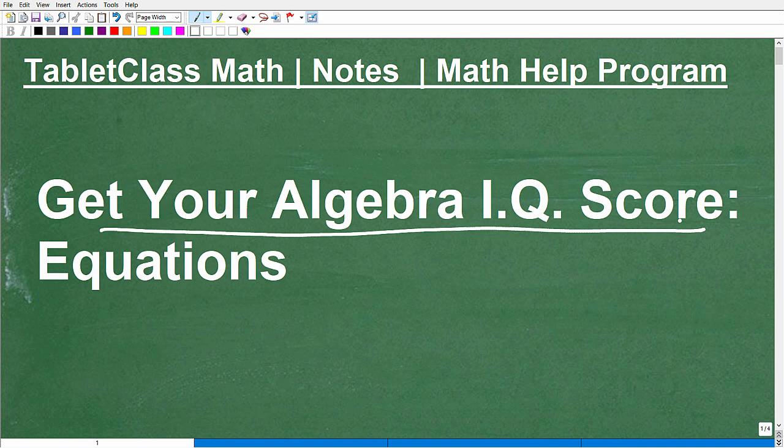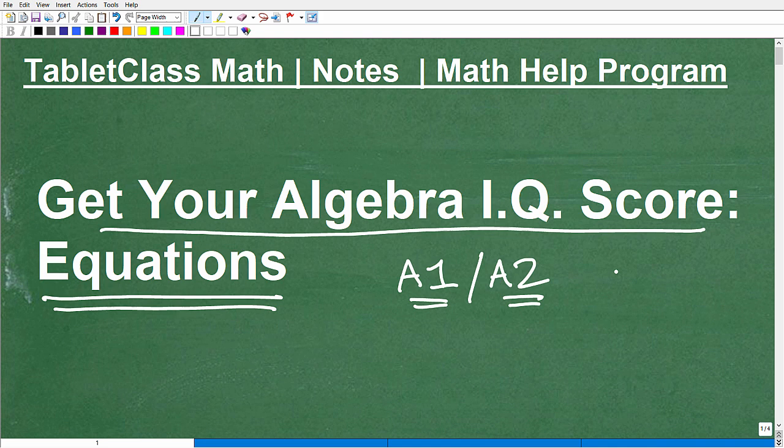Okay, let's have some fun and have you get your Algebra IQ score in the topic of equations. And this would be appropriate for anyone studying Algebra 1 to Algebra 2. There is one question that's a little bit more advanced than Algebra 1, but even if you're in pre-algebra or any other type of algebra course, you might want to play around with these questions. There's going to be four questions, and it shouldn't take you no more than five minutes at the most.